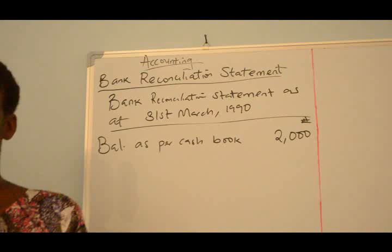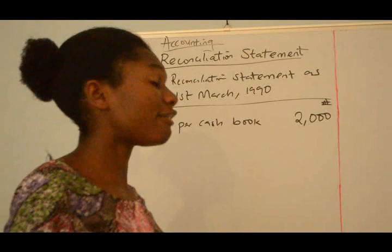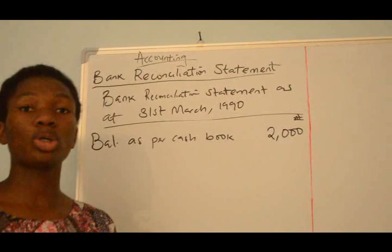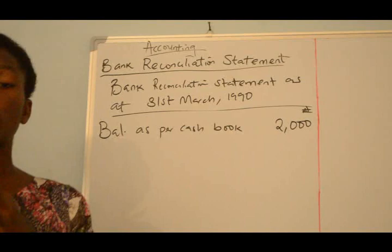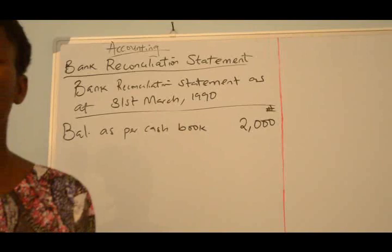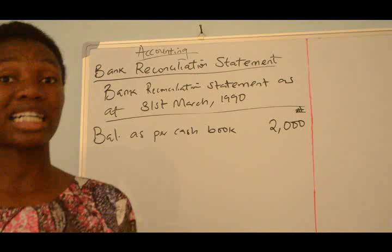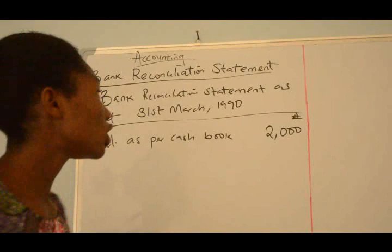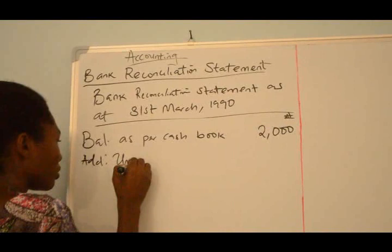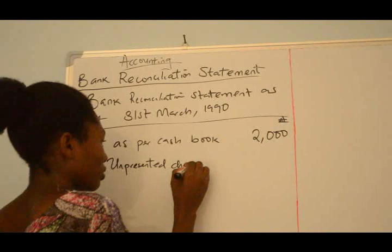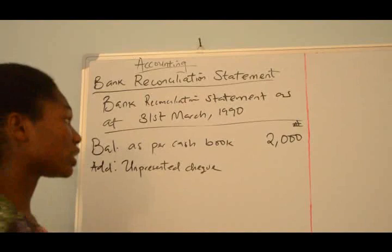Our Balance As Per Cashbook amounted to 2,000 naira, so we'll be entering 2,000 naira. Now the bank statement showed the balance of 2,270 naira — that is our final answer we should arrive at. Now we're going to be taking all those items and adding them as we did in our format. Our A said checks drawn amounting to 1,500 naira had not been presented for payment, so that is an un-presented check, and we're going to add our un-presented check of 1,500 naira.